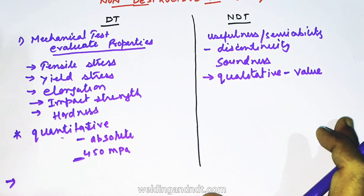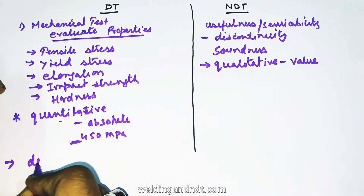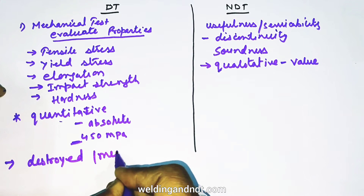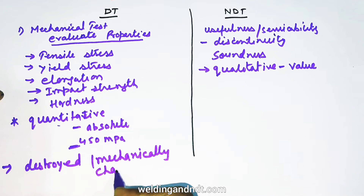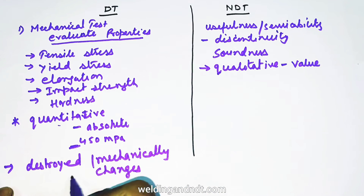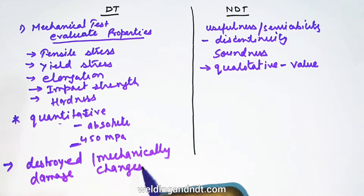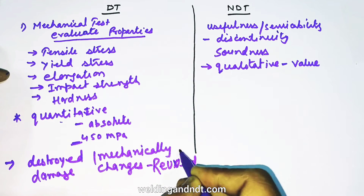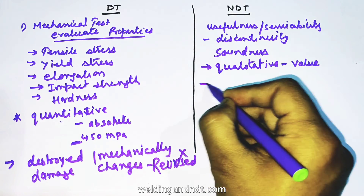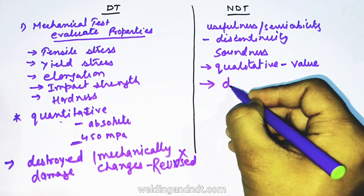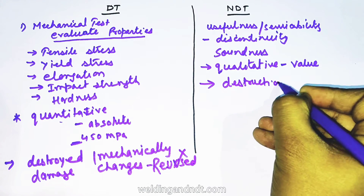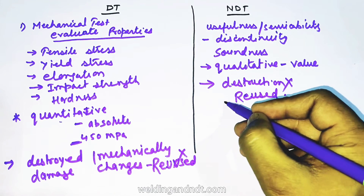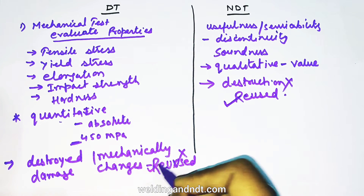In destructive testing, the material gets damaged or destroyed permanently, or it gets mechanically changed. This destruction is permanent, so the test sample cannot be reused. Whereas in NDT, the material does not get destroyed — no destruction occurs — hence the material can be reused after the test.